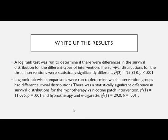For the write-up: 'A log-rank test was run to determine if there were differences in survival distribution for the different types of intervention. The survival distributions for the three interventions were statistically significantly different.' Then you write out your chi-square value. 'Log-rank pairwise comparisons were run to determine which intervention groups had different survival distributions. There was a statistically significant difference in survival distributions for hypnotherapy versus nicotine patch, and for hypnotherapy versus e-cigarette.' You could also note there was no significant difference between patch and e-cigarette.